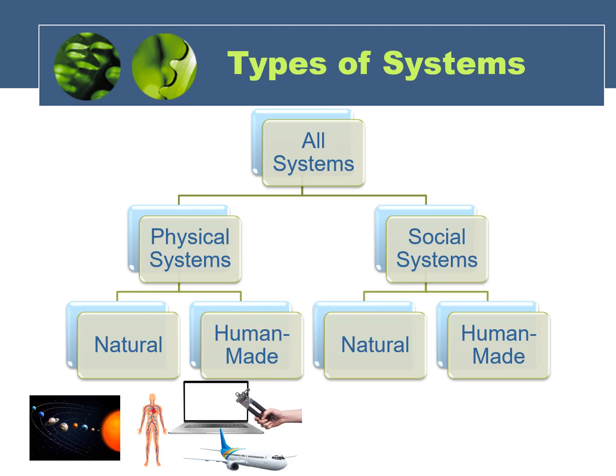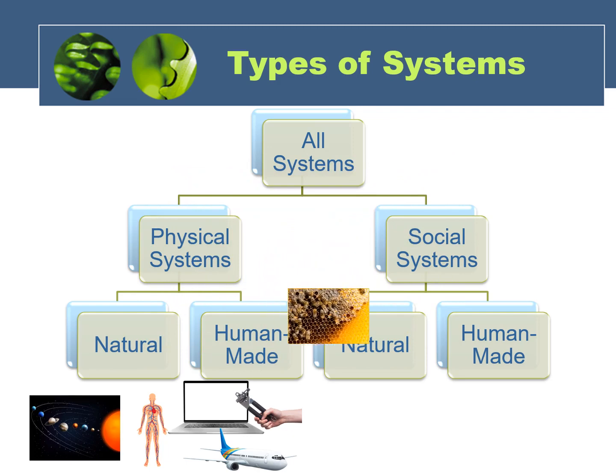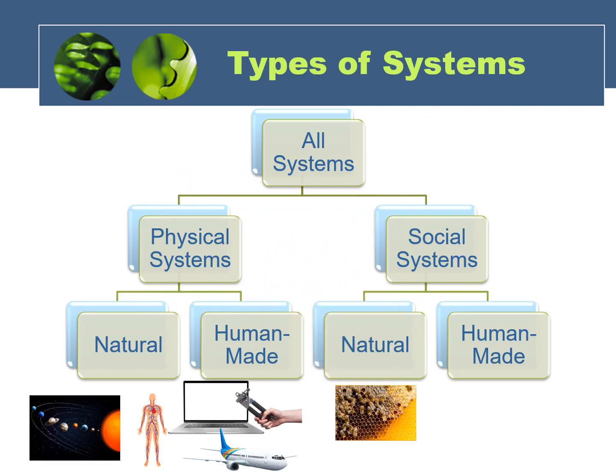Just like for physical systems, there are also two kinds of social systems. A natural social system would be made up of a group of non-human living creatures working together with different roles and relationships, and this type of system would exist whether or not humans were around. Examples of this type of system would be a bee colony or a wolf pack.